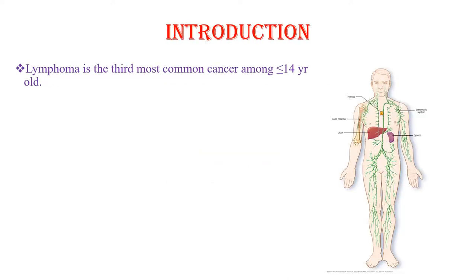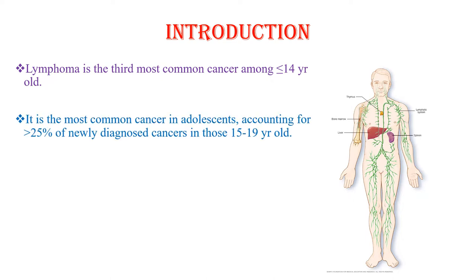Lymphoma is the third most common cancer among children aged less than 14 years old. It is the most common cancer in adolescents, accounting for more than 25% of newly diagnosed cancers in those between 15 to 19 years old.